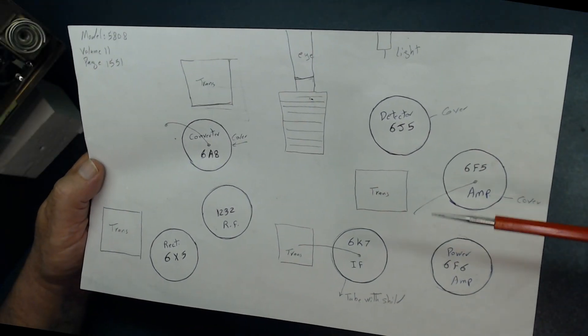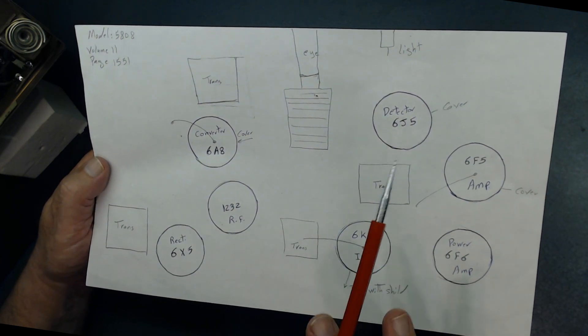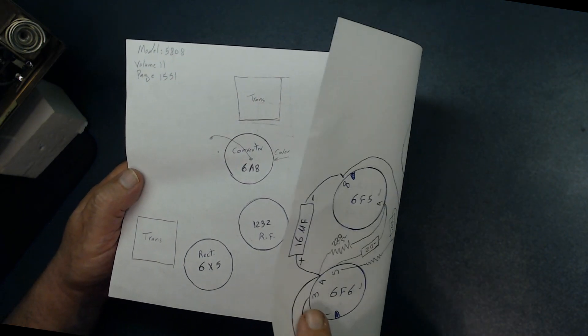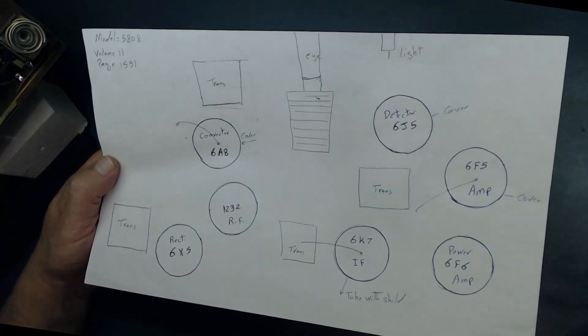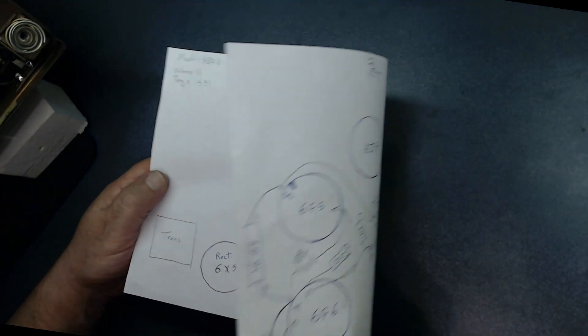Usually I draw the tube location on one side of the paper, looking from the top. Then if you turn it around, you see 6F5 is going to be right there.